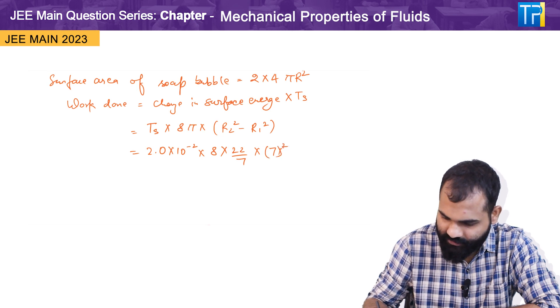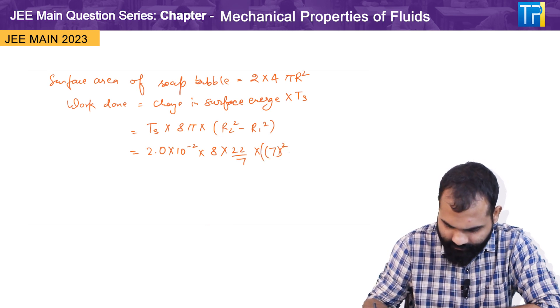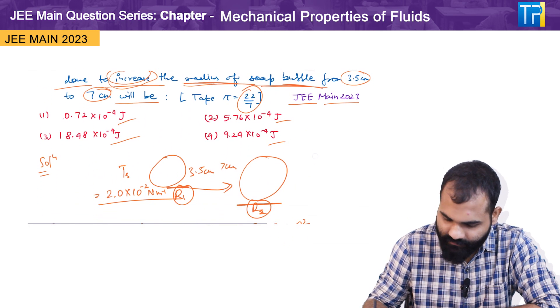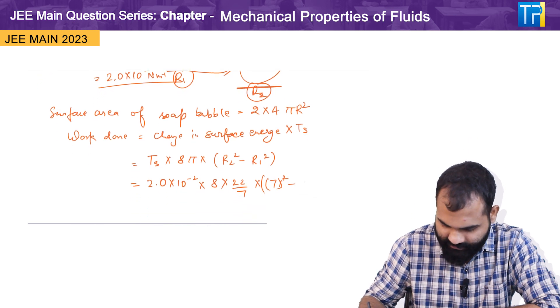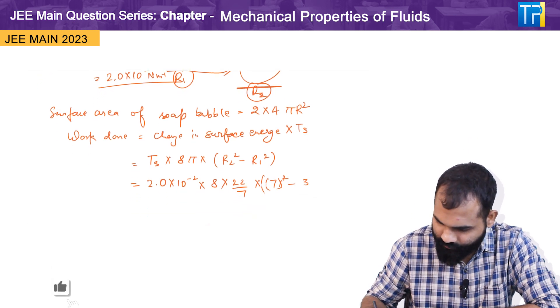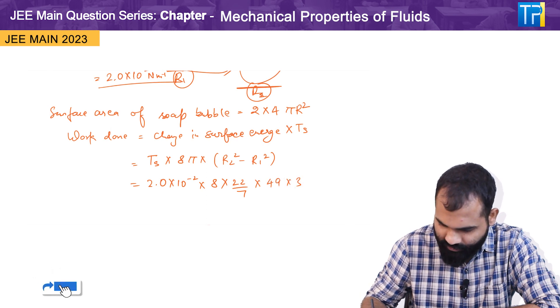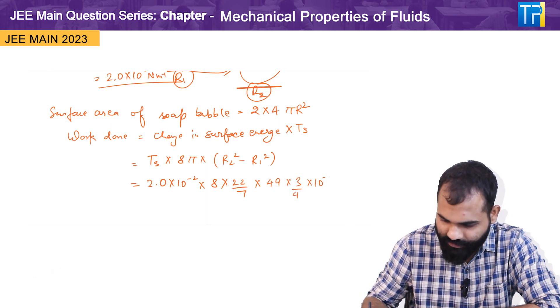And minus 3.5, or we can say that or we can write it like 49 minus 3.5 square, which is 49 into 3 by 4 into 10 raised to power minus 4.